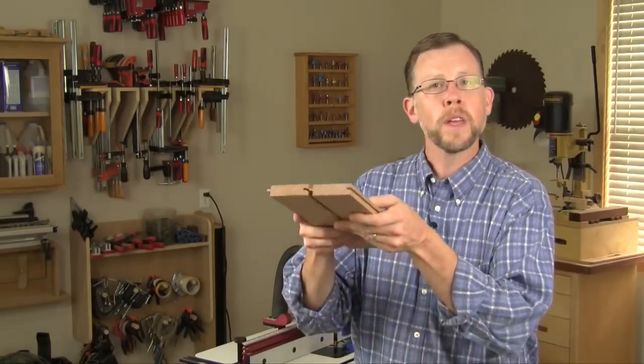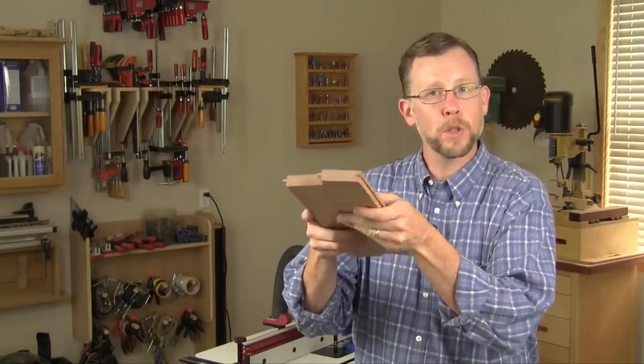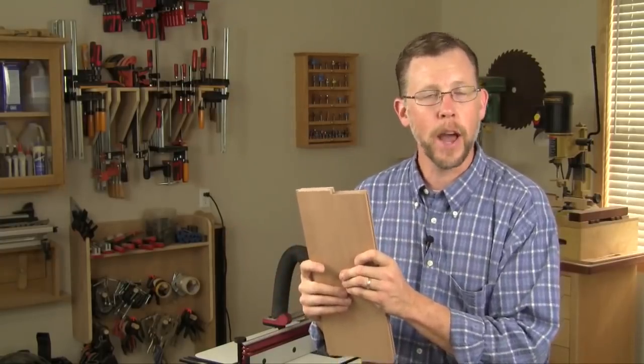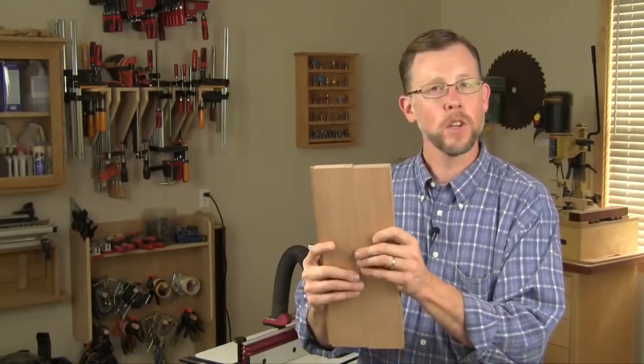When you're making these tongue cuts, it's a good idea to start on test pieces first so you can get a good fit of the tongue in the groove. What you're going for is an easy friction fit between the parts because remember, the slats are going to expand and contract with changes in humidity. So you want the tongues to be able to move in the grooves.